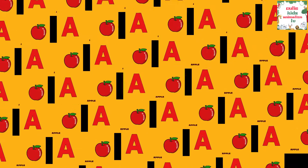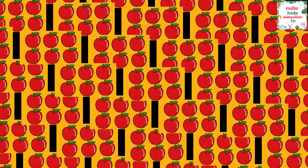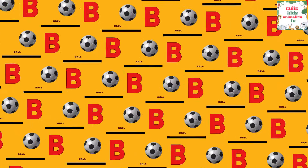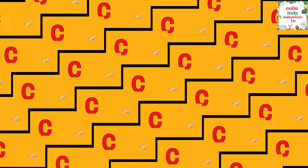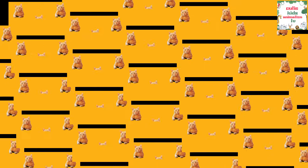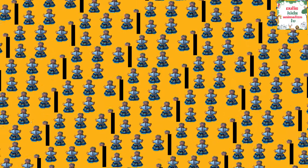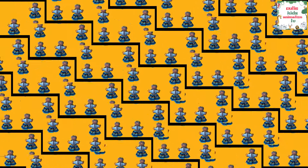A is for Apple, A-A-Apple. B is for Ball, B-B-Ball. C is for Cat, C-C-Cat. D is for Doll, D-D-Doll.